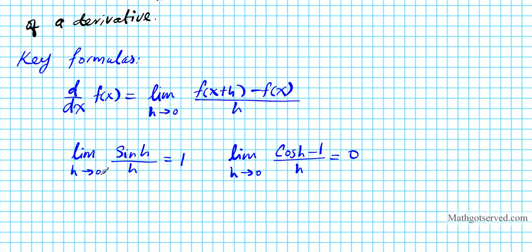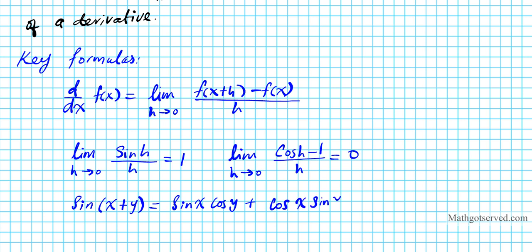Additionally, you need to know this identity — there's a sum identity from trigonometry. Sine of (x plus y) is equal to sine x cosine y plus cosine x sine y. So these are the four key formulas we're going to be using to do our proof today.